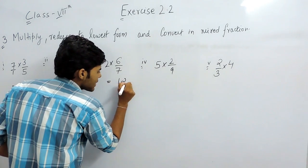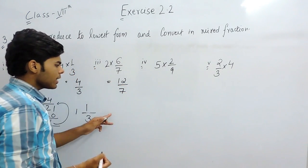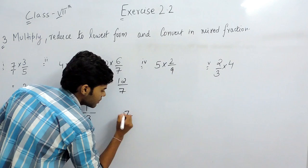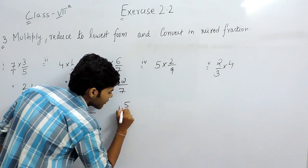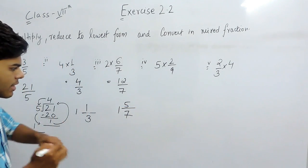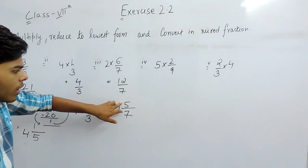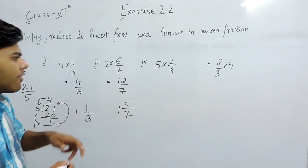Here it will be 12 by 7. And in the mixed fraction it will be 7, 1 and 5. So 7 1 times is 7, so 7 plus 5 is 12, and 12 upon 7.